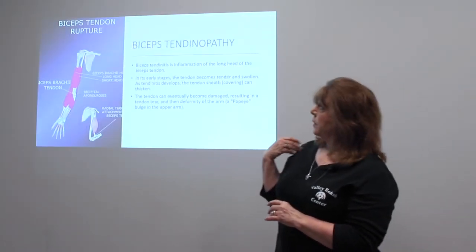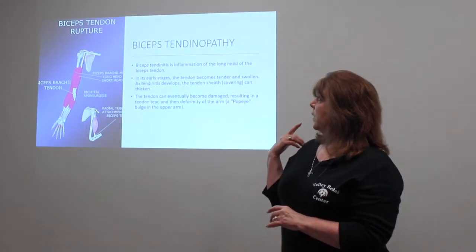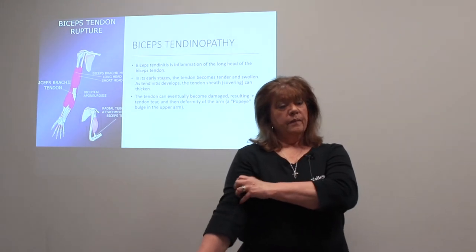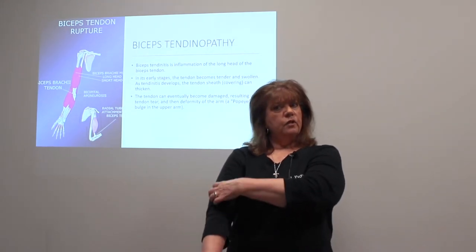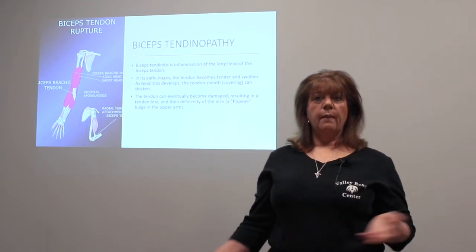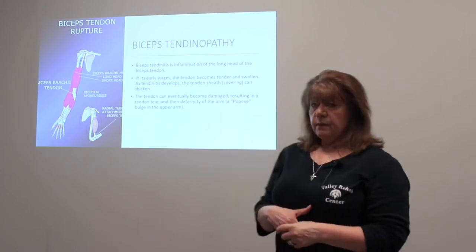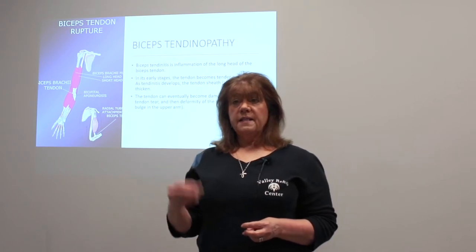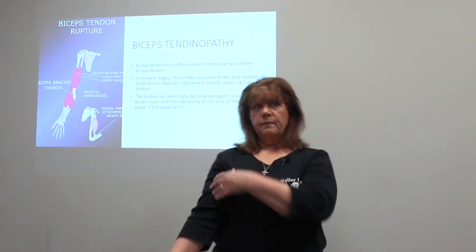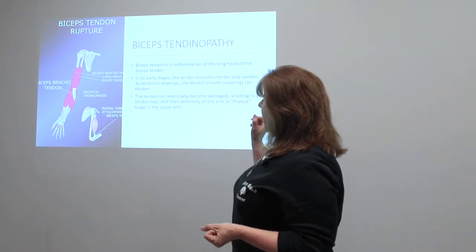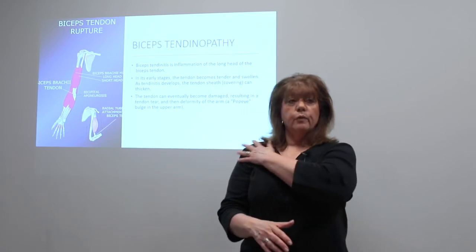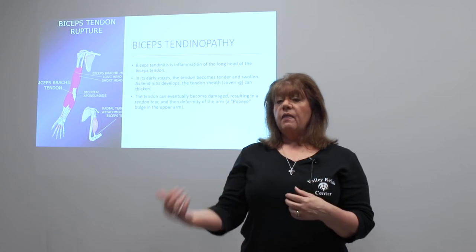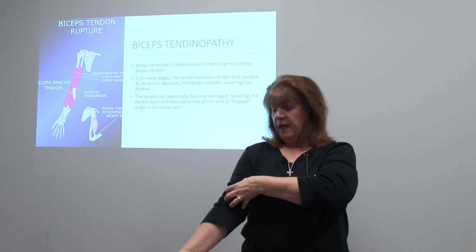Bicep tendinopathy — an inflammation of the biceps tendon — occurs when you've overworked that biceps muscle. People will come in complaining of pain right in their biceps muscle, and we have to do a lot of work to loosen that up because all of that tissue is inflamed. It can mimic a rotator cuff problem. Sometimes you might also get a biceps tendon tear. If you have a sudden onset of pain in your biceps and feel a snap or a pop, you may have ruptured the biceps tendon. You'll usually see bruising over that area, and then what we call a popeye muscle — where your biceps looks like it's way down your arm.